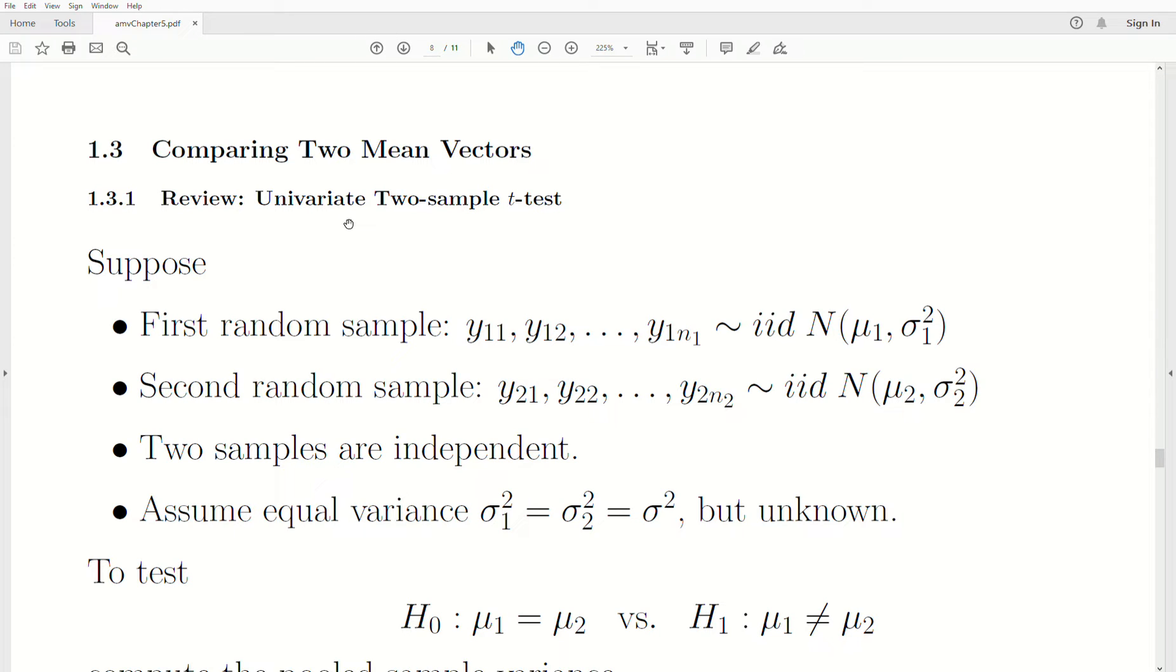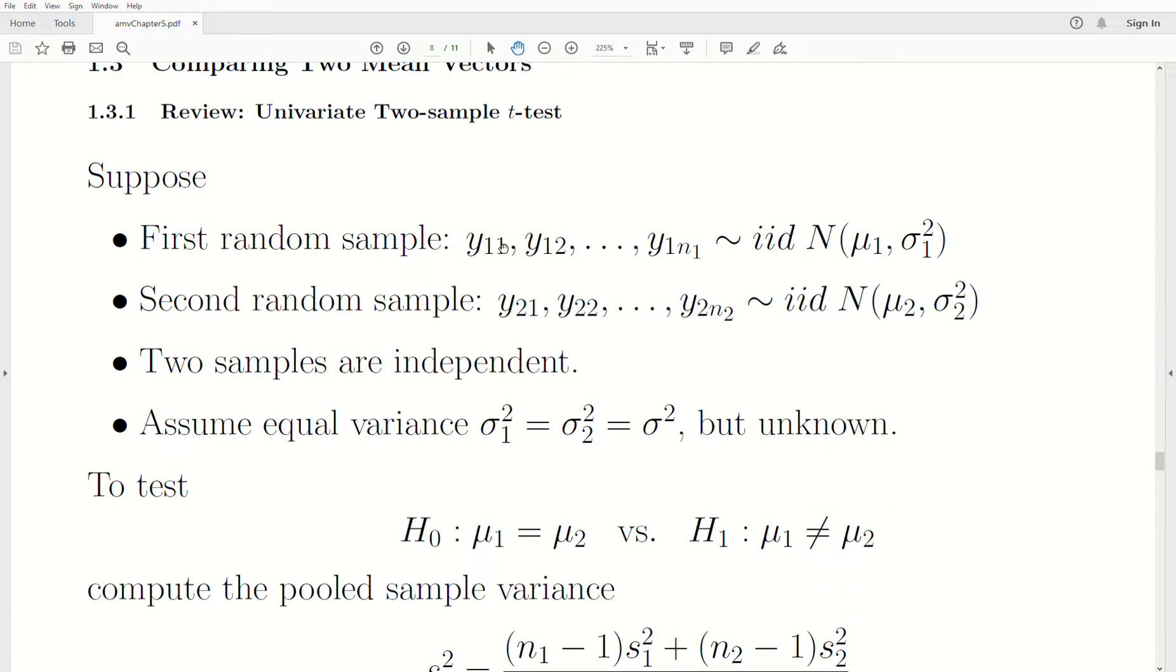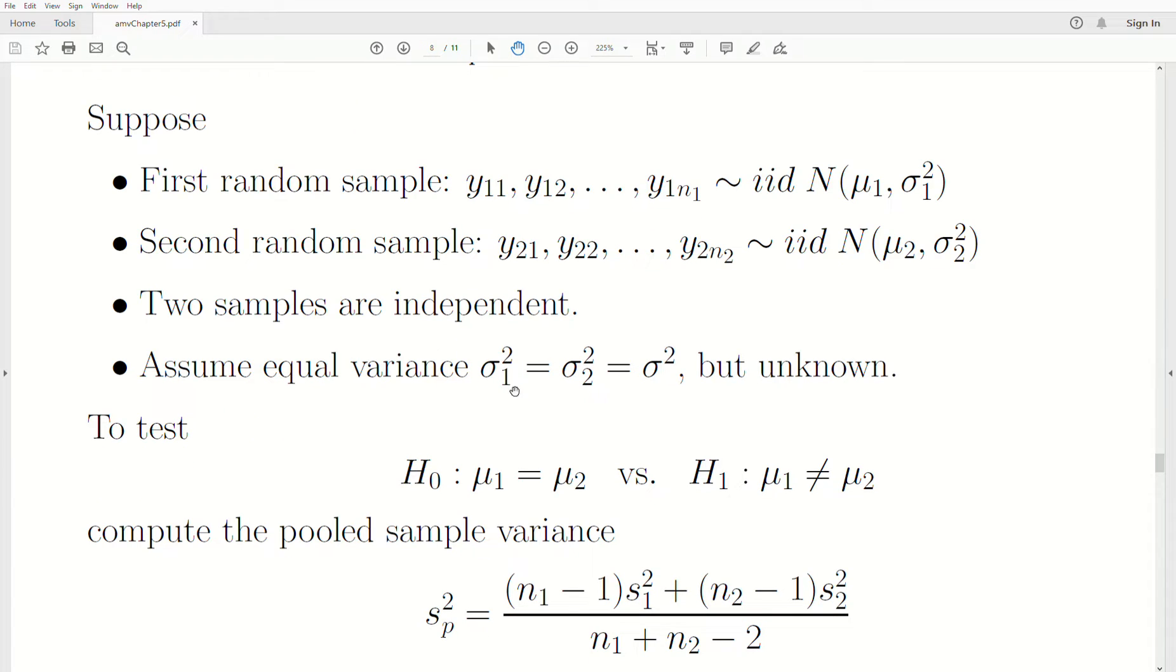Let's do a quick review of the univariate two-sample t-test. First, suppose we have a random sample of size N1 from IID normal random variables mean μ1 variance σ². We have a second random sample of size N2, IID normal random variables mean μ2 and variance σ² squared. The samples are independent from each other.